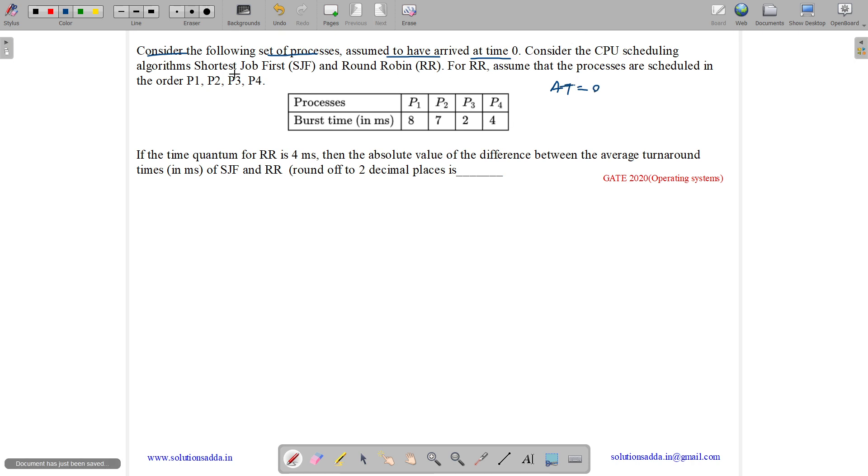Consider the CPU scheduling algorithms, shortest job first and round robin. For round robin, assume the processes to be scheduled in the order P1, P2, P3, P4. If the time quantum for round robin is 4 ms, then the absolute difference between the average turnaround time for SJF and round robin, rounded off to 2 decimal places is.